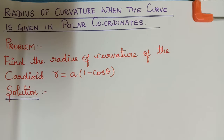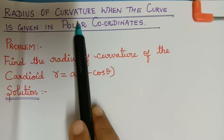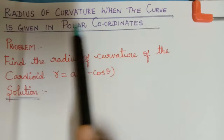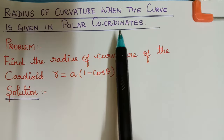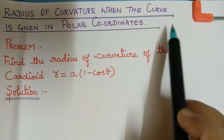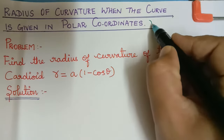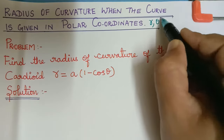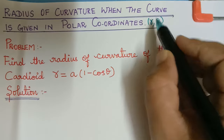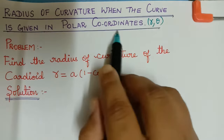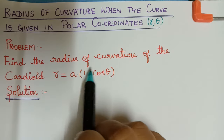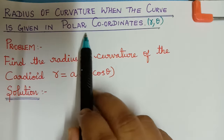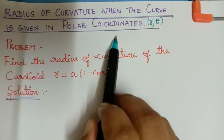Hello students, we shall now learn the radius of curvature when the curve is given in polar coordinates. That is, if the curve is given in terms of r and theta, then it is said to be in polar coordinates. Now let us see how to find the radius of curvature when the curve is in polar coordinates.